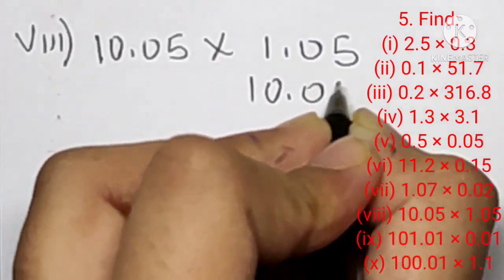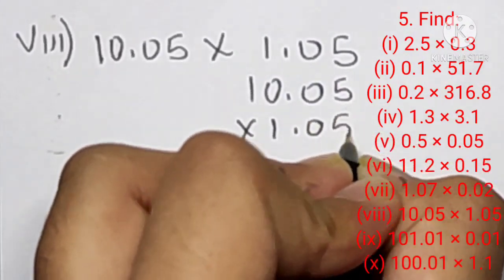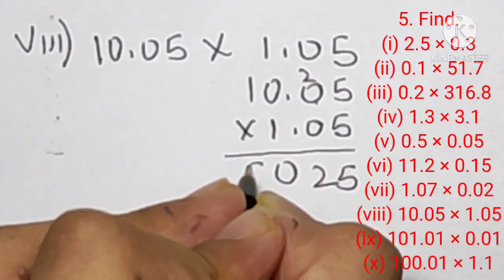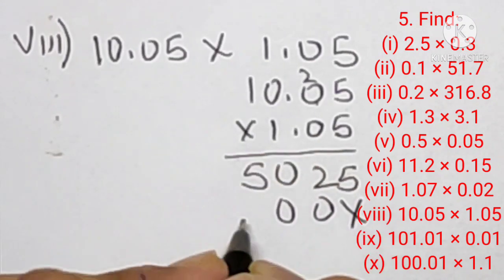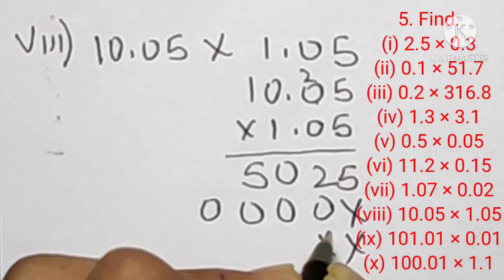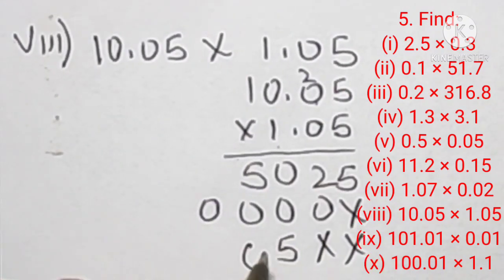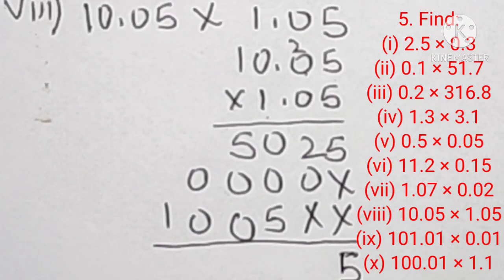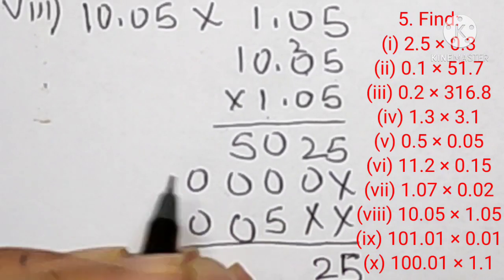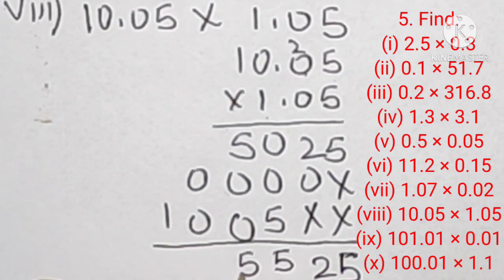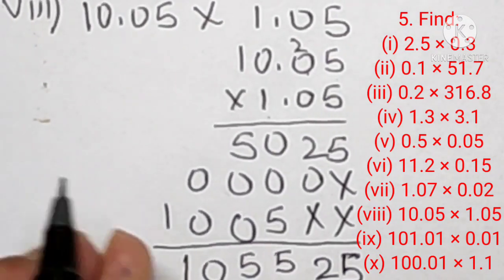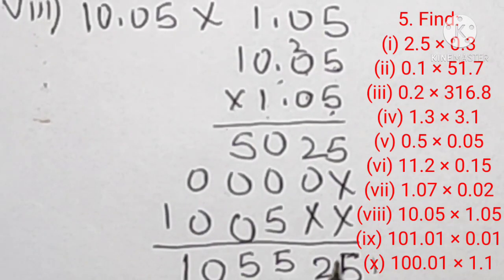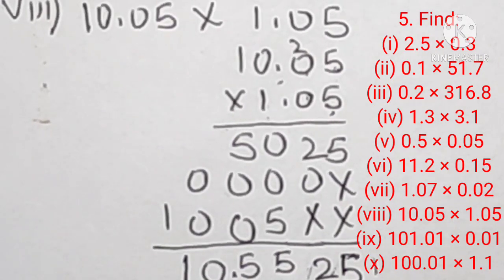Question number five, eighth part is 10.05 into 1.05. Let's multiply: 5 fives are 25, 5 zeros are 0, 5 ones are 5, then zeros and ones multiplied through. Adding all rows: 5, 5, 5, and 2. There are two decimal points, each two digits from the last, so 2 plus 2 equals 4 digits from the last. Our answer is 10.5525.